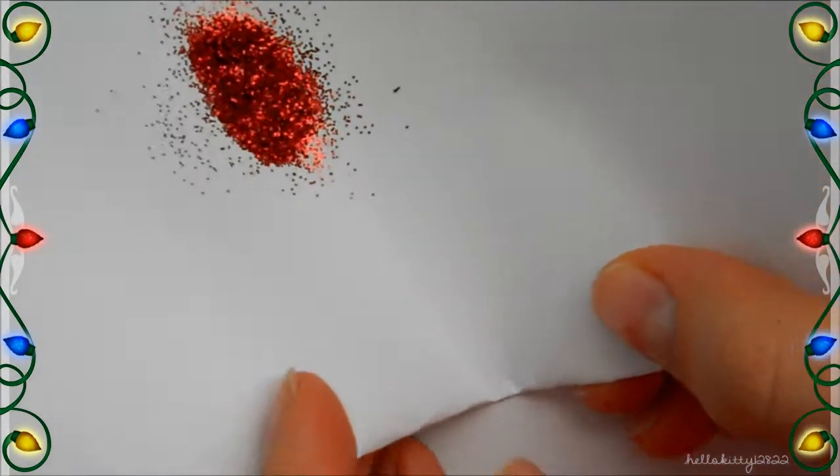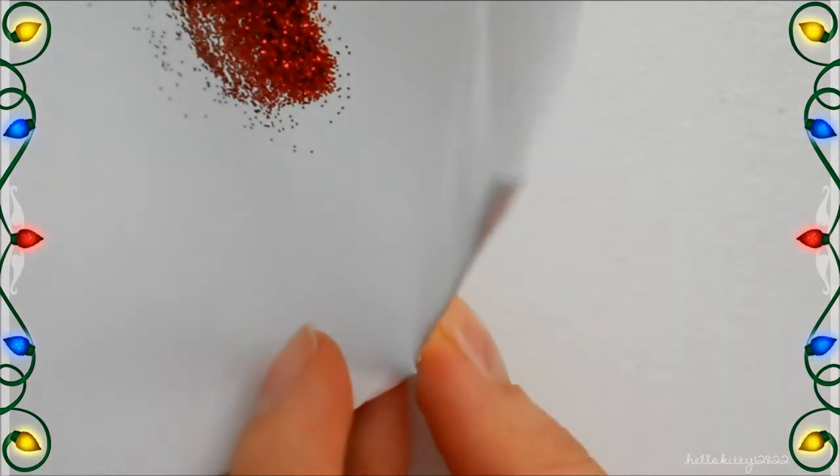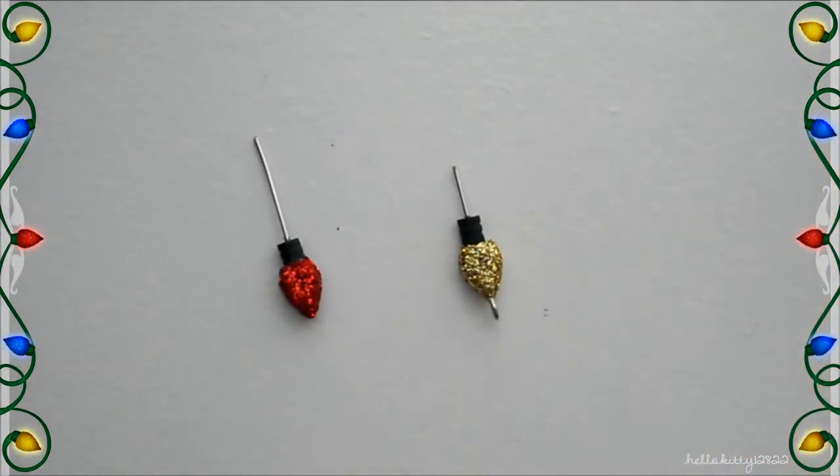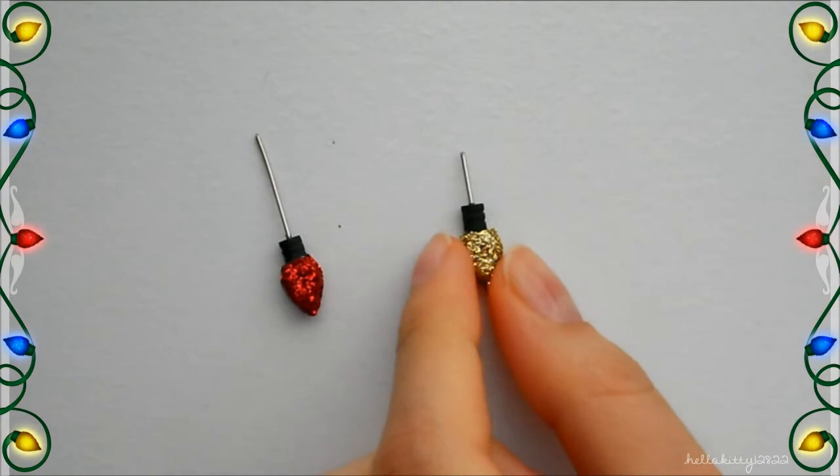Then with the leftover glitter, I folded my paper and just placed that back into the container. Now that I have my two light bulbs, I'm just going to bend the top parts and connect them together.